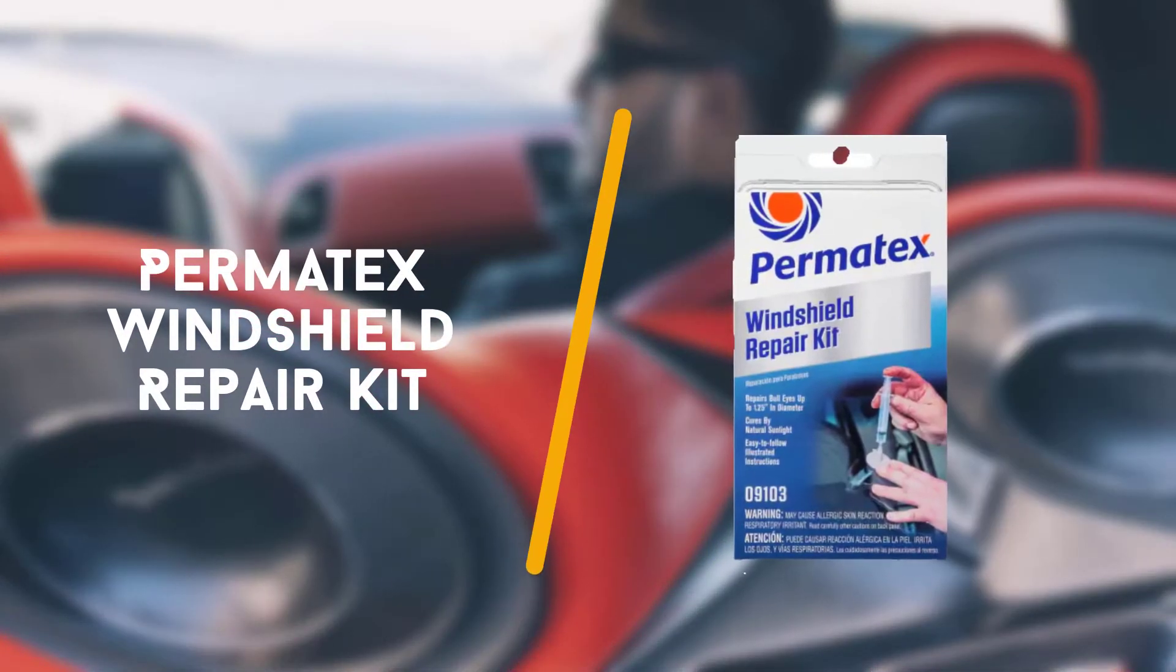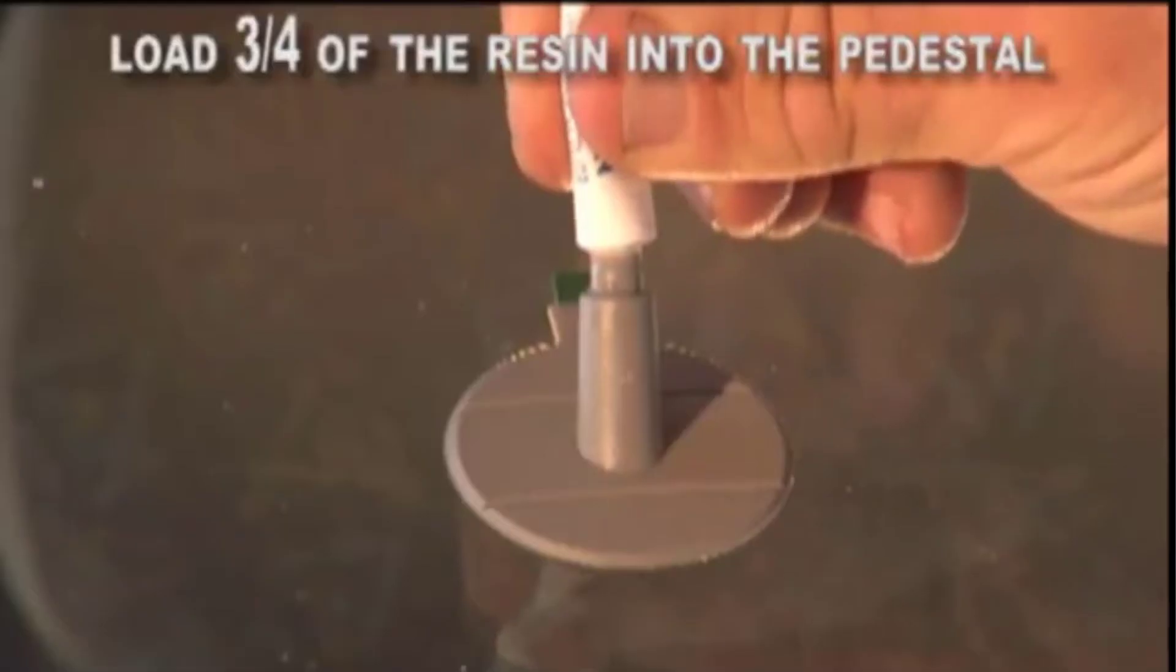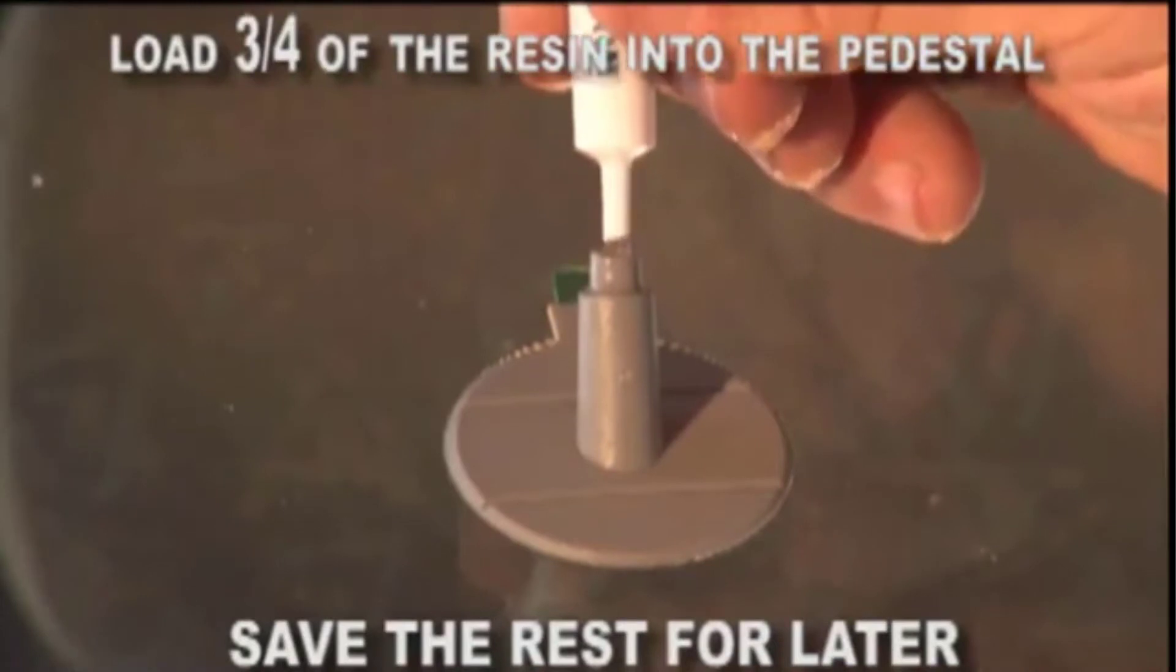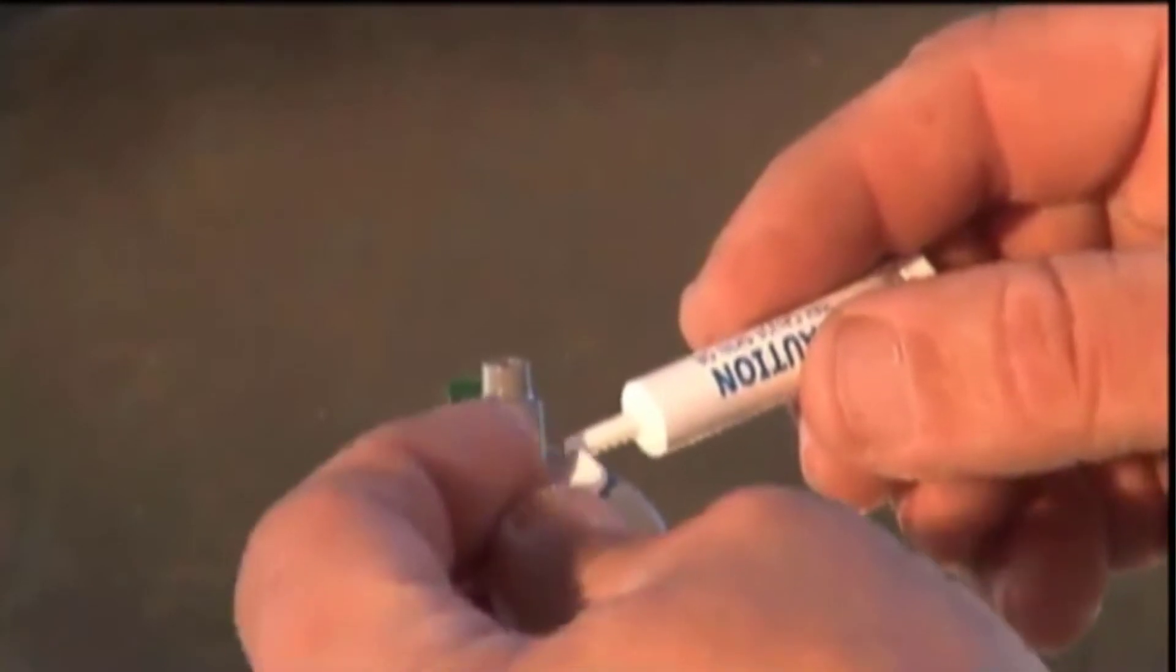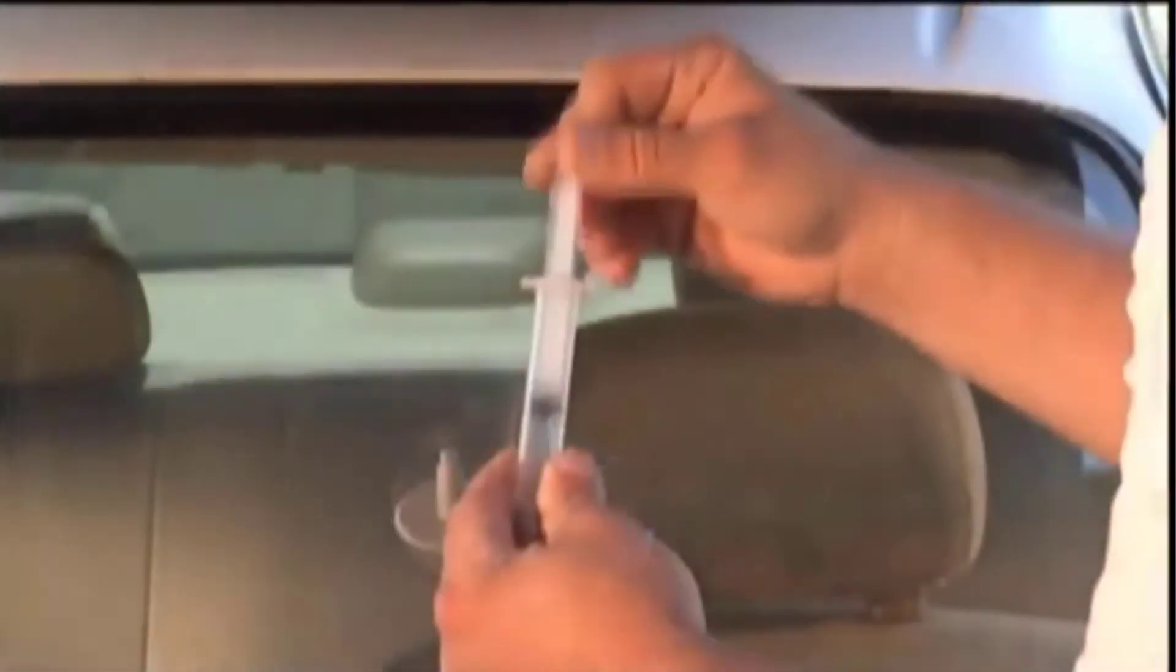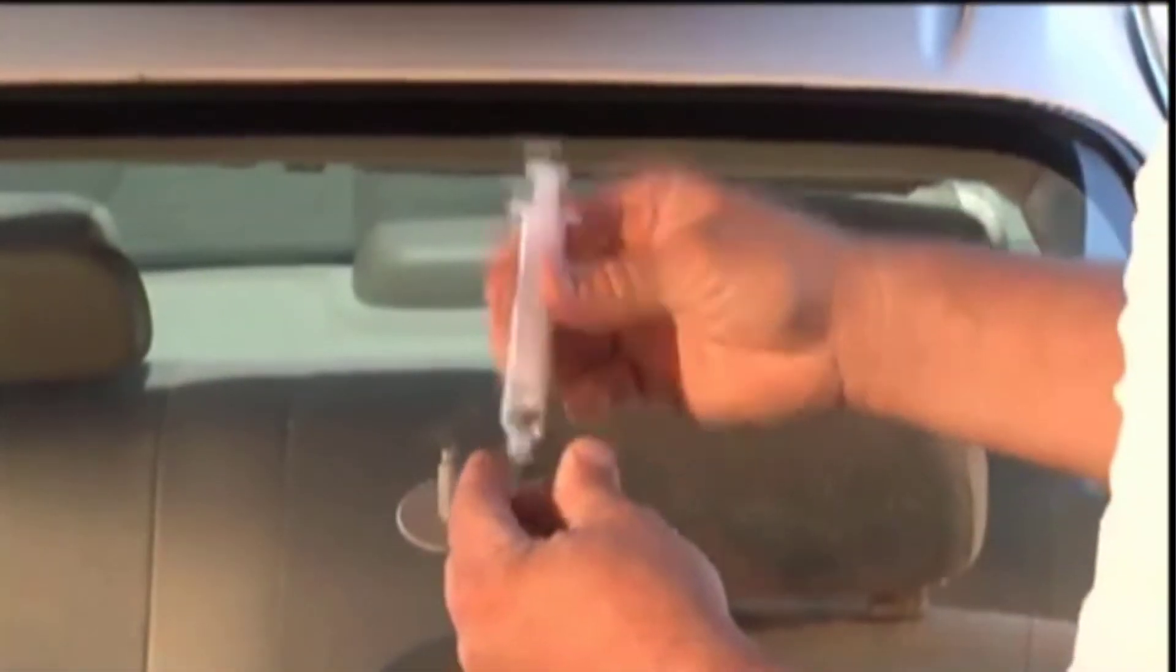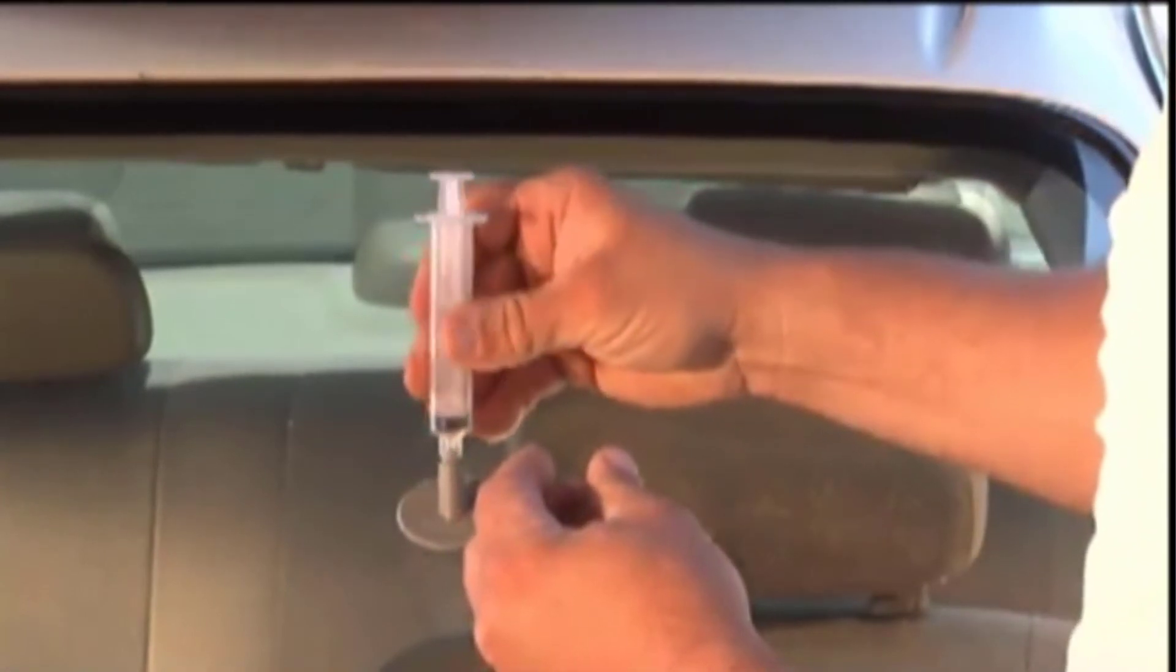To begin with is the Permatex windshield repair kit. The windshield repair kit from Permatex Canada Inc. is a high technology heavy duty kit that makes permanent airtight repairs of bullseye cracks of up to 1.25 inches on any laminated glass window.